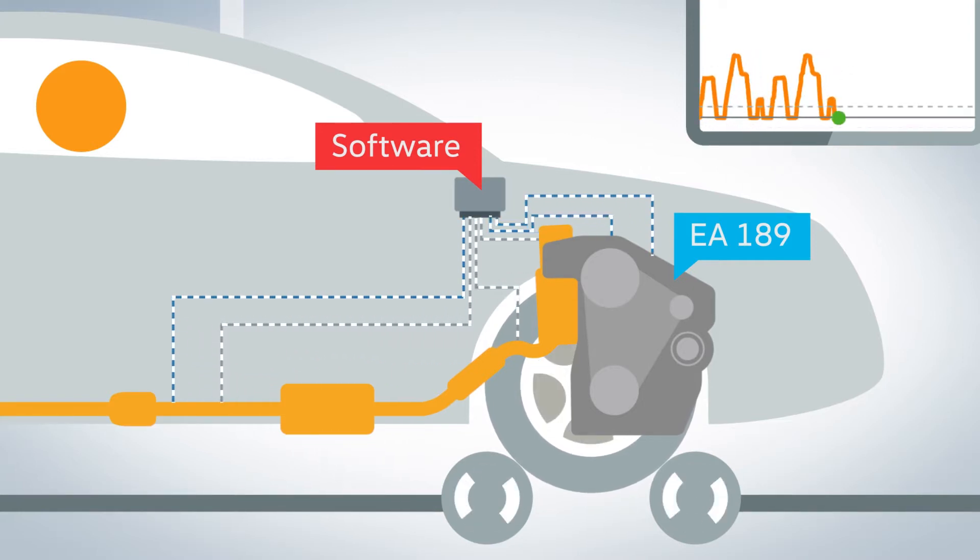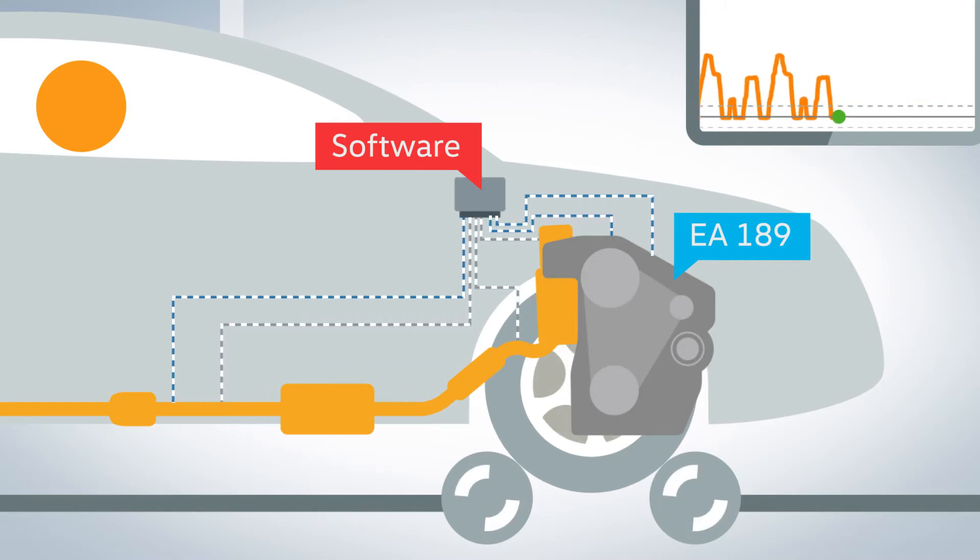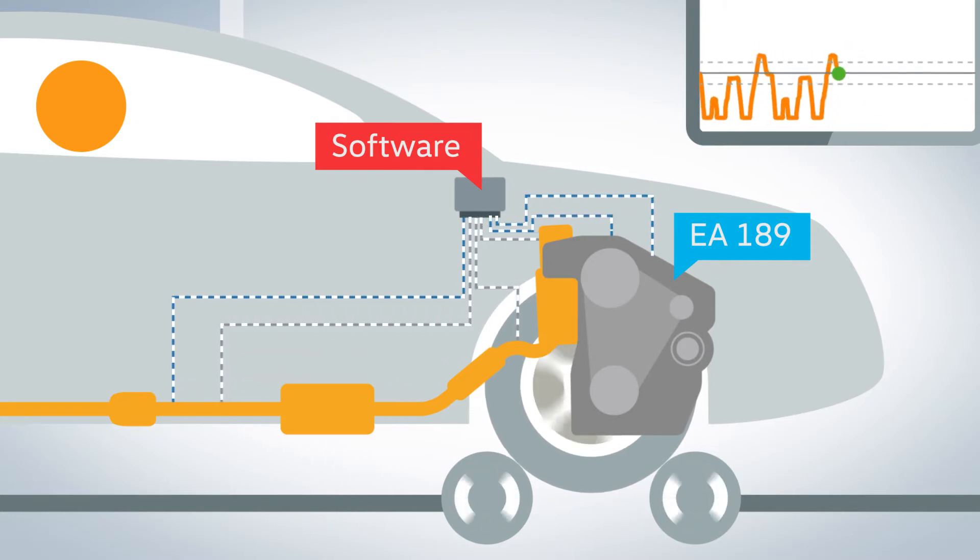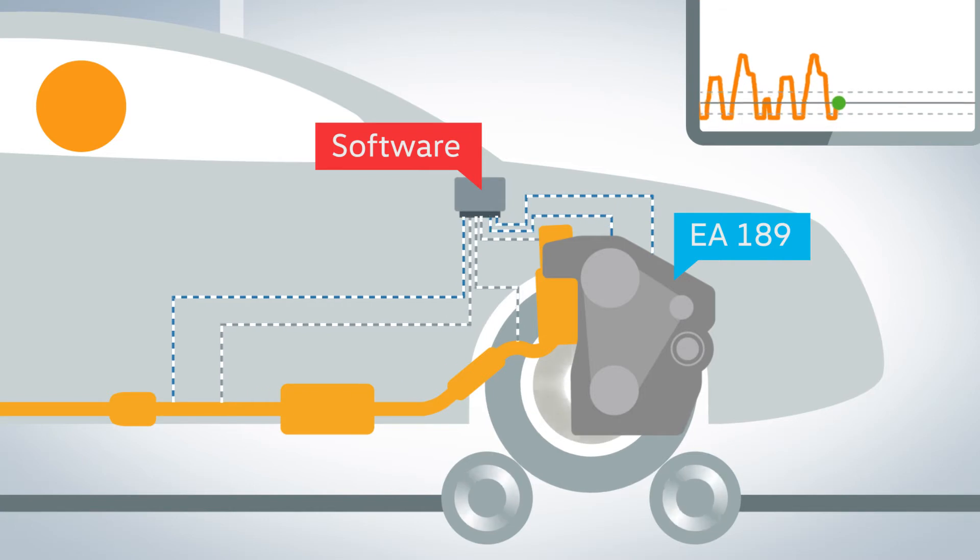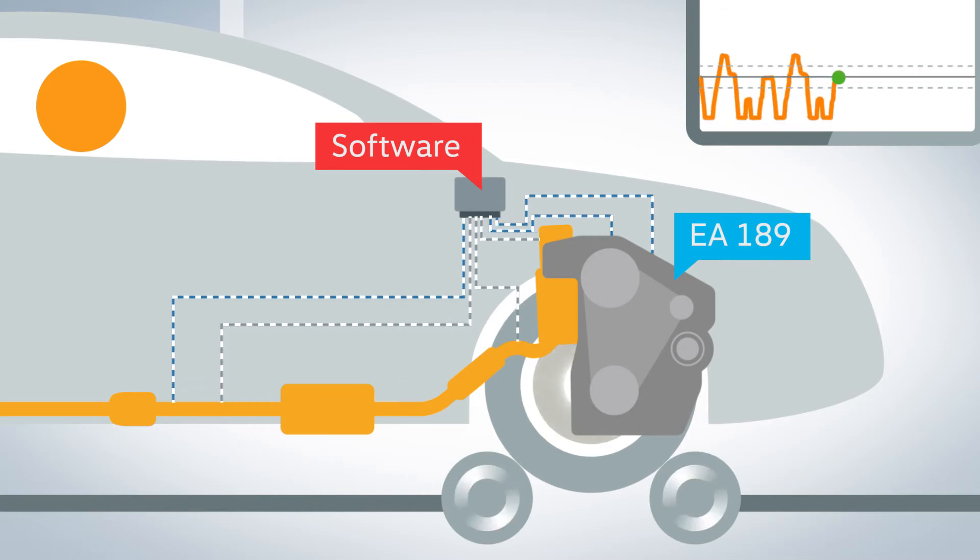The engine control unit switches between two different modes of exhaust gas recirculation based on the driving curve detected. Mode 1 optimizes NOX values under test conditions.